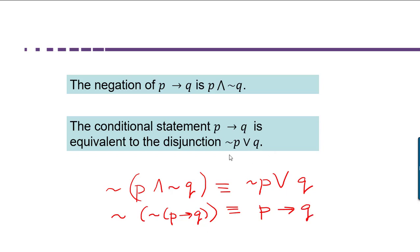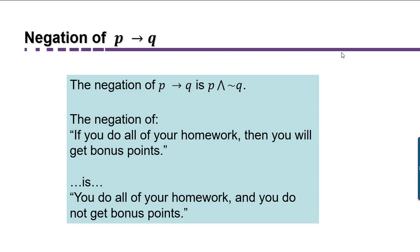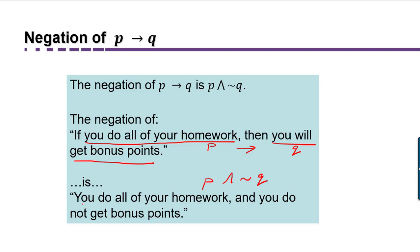Let's put these two facts to work. We already saw the example of the negation of 'if you do all your homework, then you'll get bonus points.' Here the components are: P is 'you do all your homework' and Q is 'you will get bonus points.' This is a statement of the form P implies Q, and we know its negation should be P and not Q — that is, 'you do all of your homework and you do not get the bonus points.'